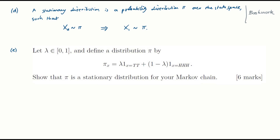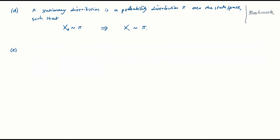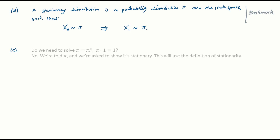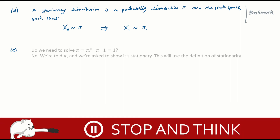Part E: here's a pi that's given to us and we're told to show that pi is a stationary distribution for your Markov chain. It's a bit tricky to think through what we're meant to do. We're not meant to solve the standard stationarity equations to derive the formula — we're told the formula. All we're asked to do is verify that this given formula is indeed a stationary distribution. In other words, we'll use the definition of stationarity: suppose that X_0 is drawn from this given distribution — prove that X_1 will also have that distribution.